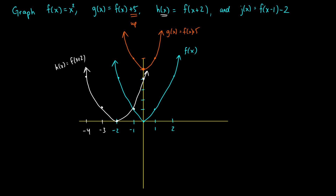But we can combine shifts. With j of x, we do f of x minus 1 minus 2. There are two things going on: a downward shift of 2, and x minus 1 means a rightward shift of 1. Our initial point at 0, 0 moves to 1, negative 2. The point at negative 1, 1 shifts down two to negative 1, negative 1, then over right to 0, negative 1. So we get a graph shifted right one and down two. This is how we can combine our shifts together.